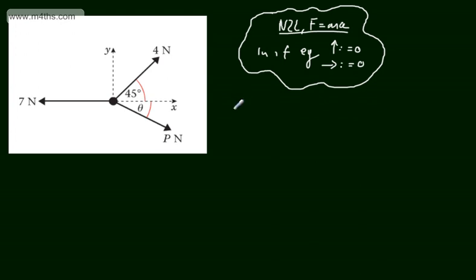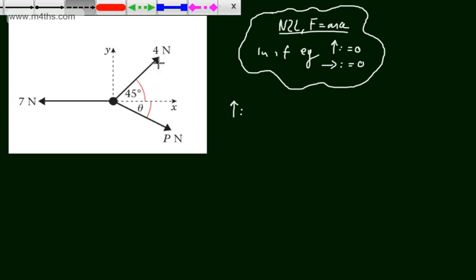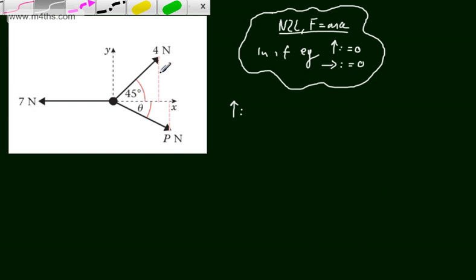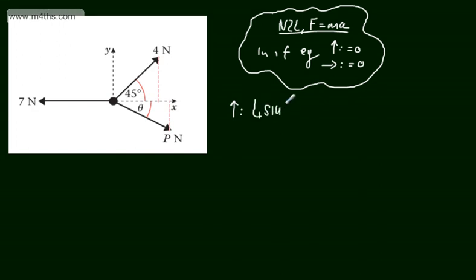Let's consider resolving vertically. Looking at the forces acting on the particle, I'm going to drop a perpendicular down here. The seven Newton force is not going to be included here — it's acting purely horizontally. So we've got a 4N force inclined at 45 degrees. The vertical component will be 4 sine of 45 degrees — just consider a little right-angle triangle where the hypotenuse is 4 and we want the opposite. I'm now going to subtract the force P at angle theta, so that will be P sine theta.